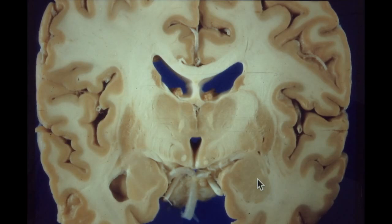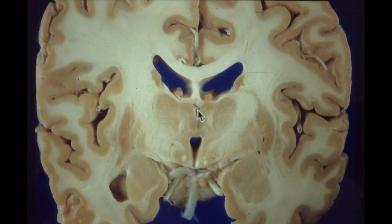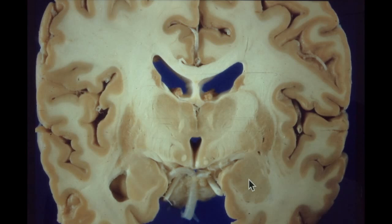This beautiful coronal section shows the amygdala so clearly — much better than the wet specimens available today — and serves as quite a nice summary. You can see the hypothalamus down here, the fornix coming down into the hypothalamus, the mammillothalamic tract going up to the anterior nucleus, and the cingulate gyrus above the corpus callosum. Mainly I wanted to show you how nice and large the amygdala is, how it's right beneath the uncus.